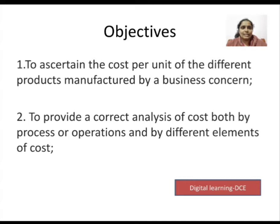Now, let's look at the bullet points on screen. The first objective is: to ascertain the cost per unit of the different products manufactured by a business concern. Of course, every business concern manufactures some products or services. But they should know how much cost occurred per unit of a product or service.